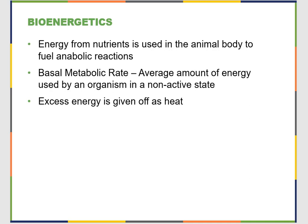For bioenergetics — how all these cells use energy — you have to go through anabolic reactions: build up molecules to store them and break them down to release their energy. All living things therefore have a basal metabolic rate, which is the average amount of energy an organism needs to survive. You never truly enter stasis where you don't need any energy at all. The unfortunate part is that excess energy is given off as heat — the reactions are not 100% efficient, actually a little less efficient than the average car.